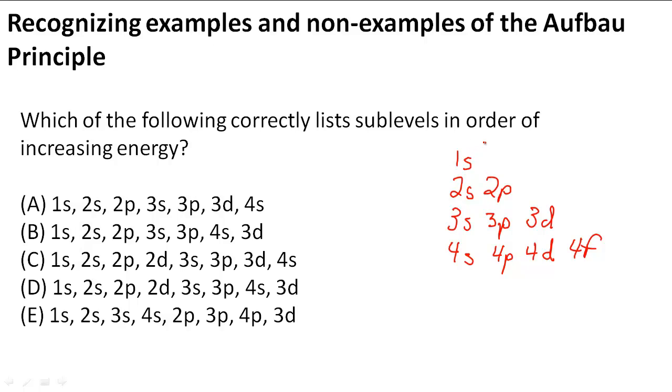So remember that we would draw lines through here so that we remember what order they go in. And here this problem is pretty much already done for us because we know that the order should be 1s, then 2s, then 2p, then 3s.